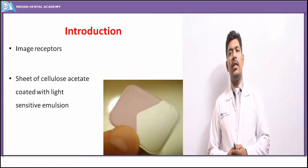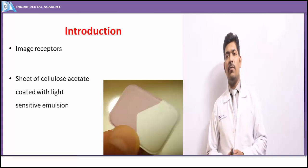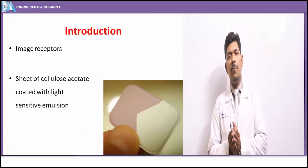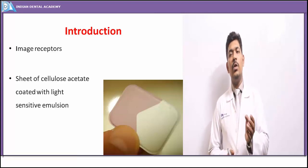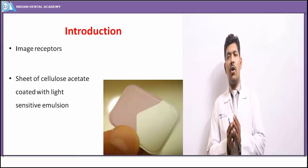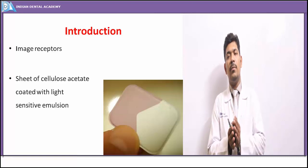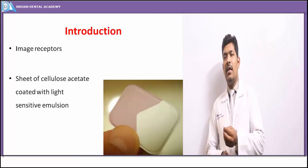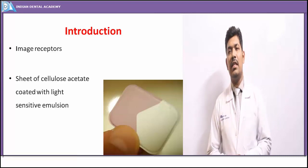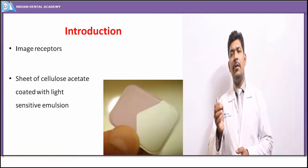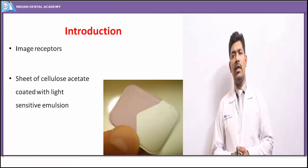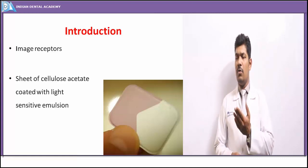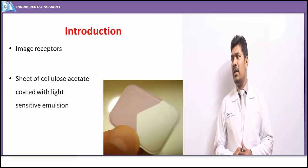Image receptors is a synonym used for the films used in taking a specific image of interest. An image receptor is a receptive vehicle that can take the exact replica of the image produced by x-rays. It is a combination of a gelatinous matrix which holds the film in a specific place in the oral cavity, along with a light-sensitive emulsion receptive to x-rays or light rays, so that a latent image is produced and after processing we get an exact replica. An emulsion is a colloidal suspension of a solid in a liquid matrix.